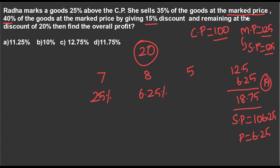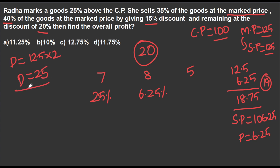The remaining 5 goods have a 20% discount. 10% of 125 is 12.5, so 20% is 25. So 25% discount means selling price is 100. So zero percentage profit.